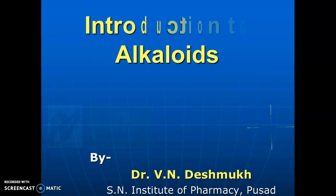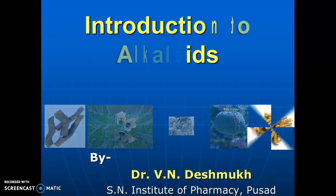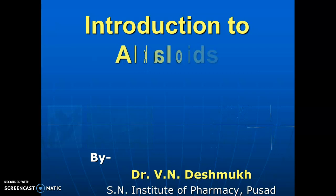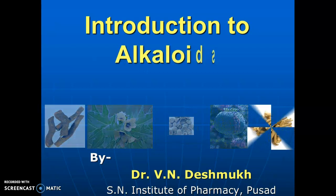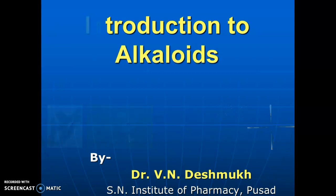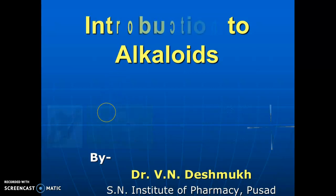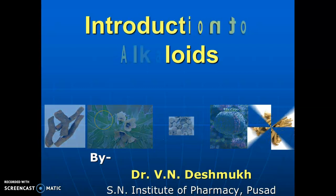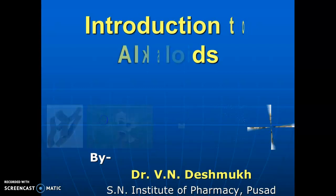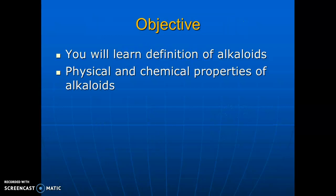All of you know about alkaloids. These are the principles which are present in plants and animals. These alkaloids are important for therapeutic utility. They are present in plants in very small amount. The objective of today's learning is you will learn the definition of alkaloids and the physical and chemical properties of alkaloids.